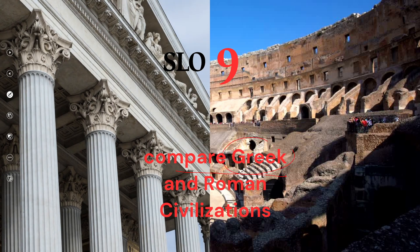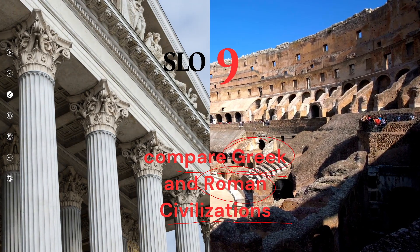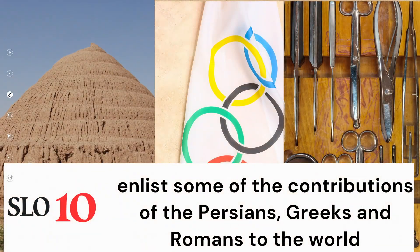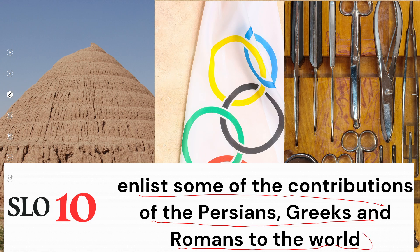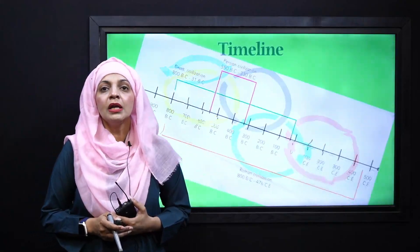And after that we will compare Greeks and Romans, because there are many similarities between both civilizations. We will discuss their architectures and their various inventions. And further we will just enlist some of the contributions that the Persians, Greeks, and Romans gave to the world — things that those civilizations gave us and that we are still carrying forward today.